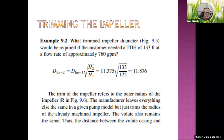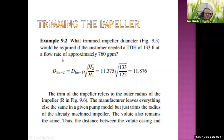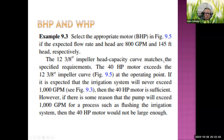In practice you'd just tell the pump company your required flow rate and pressure and they'd trim the impeller. But as a calculation example: for a total dynamic head of 133 feet and 760 gallons per minute, we calculate the trimmed diameter as 11-and-3/8 inches × √(133/122) = 11.876 inches. That's the impeller size you'd specify to the manufacturer.